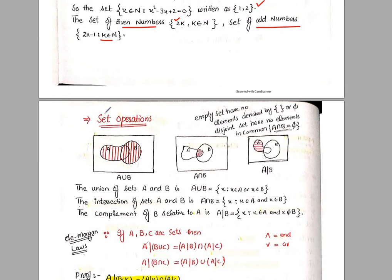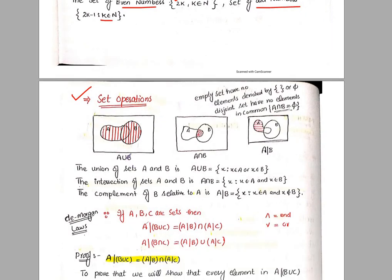Next we study set operations. What are set operations? The three set operations we will study are: A union B, A intersection B, and A complement B. In the union, the elements that come are those that belong to A or B. We denote it with this symbol. In union, all elements of A and B are included. In intersection, the common elements of both come — those that are in both A and in B — and we denote it with this symbol. That shaded region is the A intersection B region.